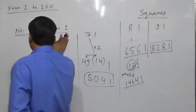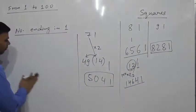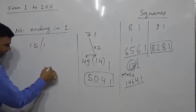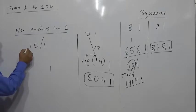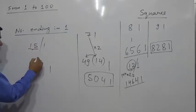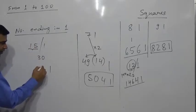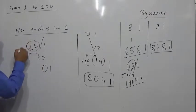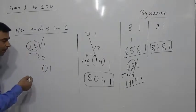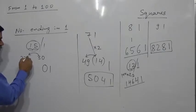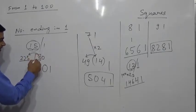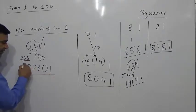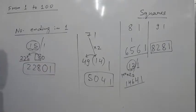Suppose we have 151. Separate 1: in the end we have 1; in the middle 15 × 2 = 30, so 0 comes here and 3 carries forward; 15² = 225, and 225 + 3 = 228. The final answer for 151² is 22801.